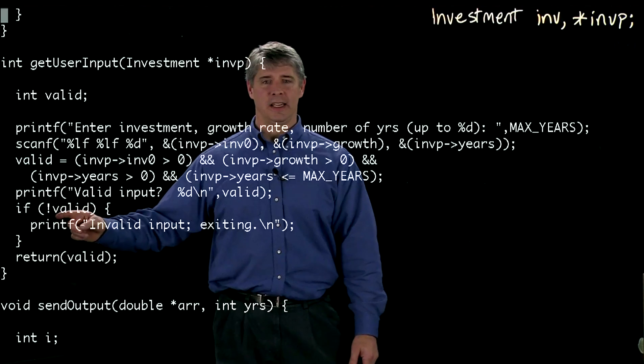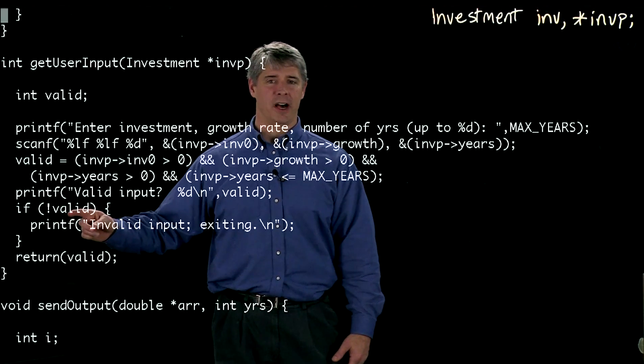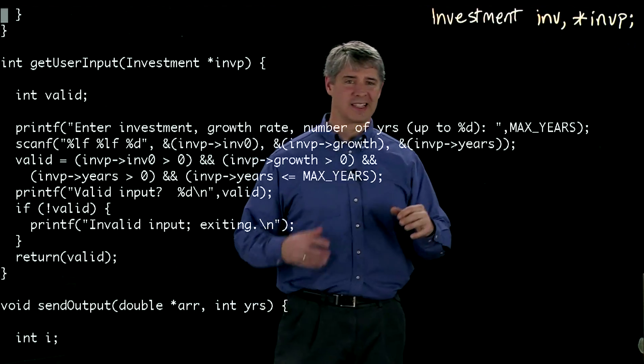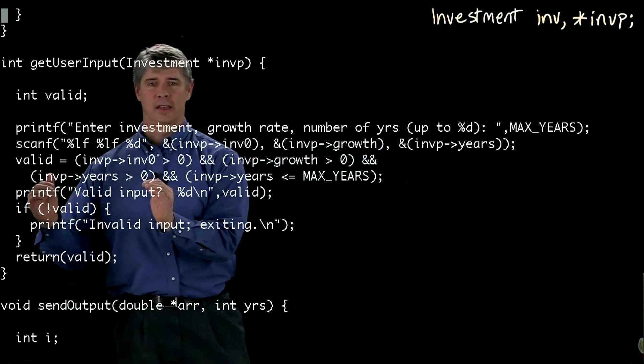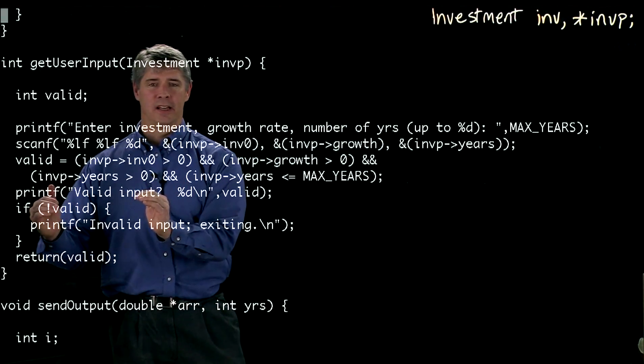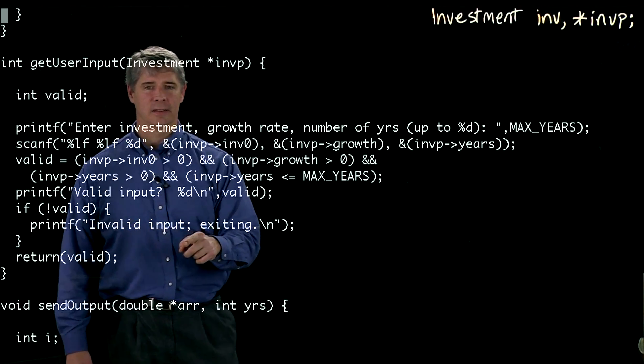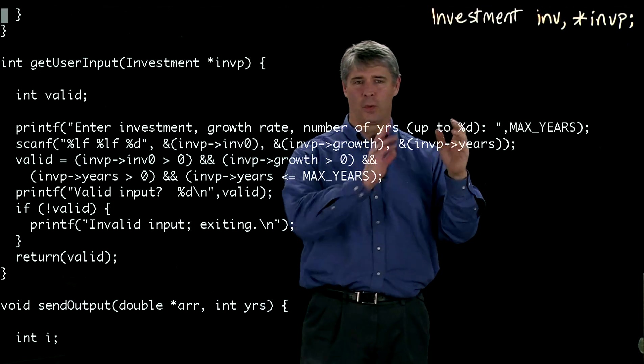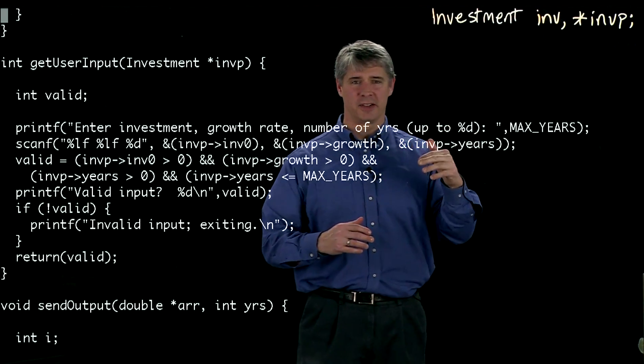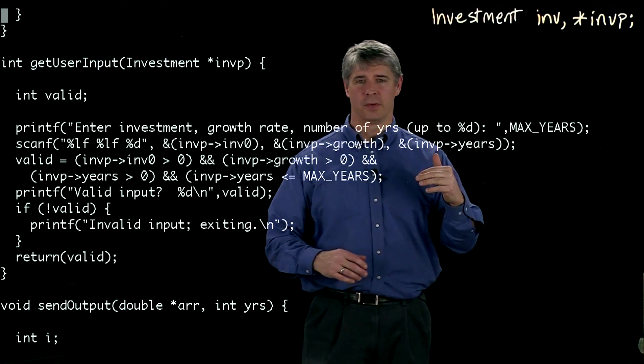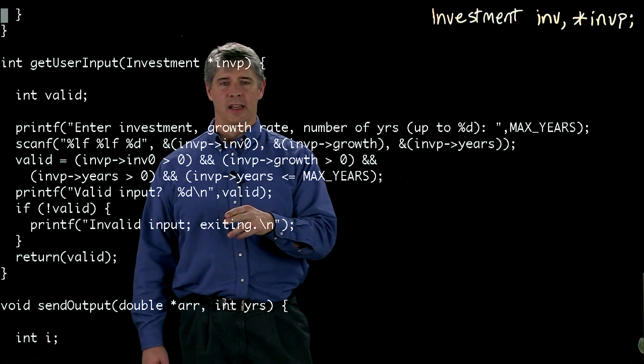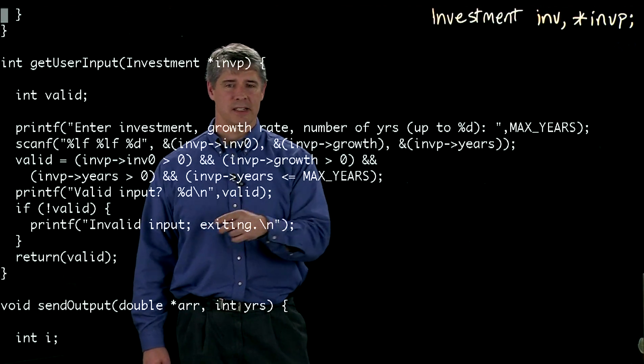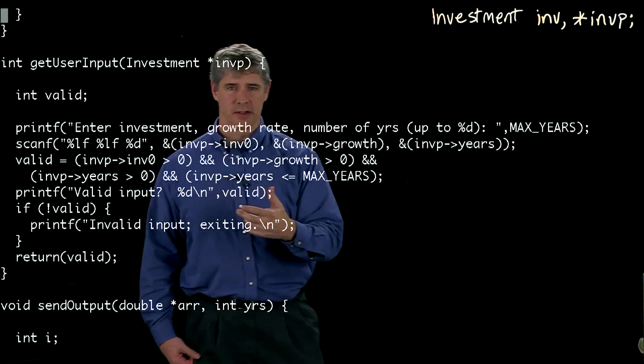And then we check to see if the input is valid or not. If it's not valid, the exclamation point means logical not. So if the input is not valid, then it's going to print invalid input exiting. So the not basically checks if it's a one after it, then it becomes a zero. If it's a zero after it, it becomes a one. So if it's invalid, it's going to print out this message and then return the value zero or one.